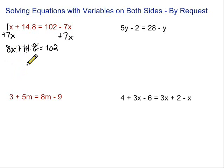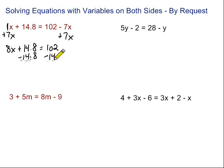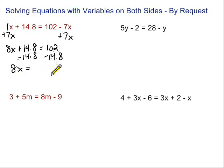We'll start by getting rid of this plus 14.8. How do we get rid of a plus 14.8? We do the opposite — subtract 14.8. So we're going to subtract 14.8 on both sides of our equation, and then bring down what's left: 8x equals 102 minus 14.8.